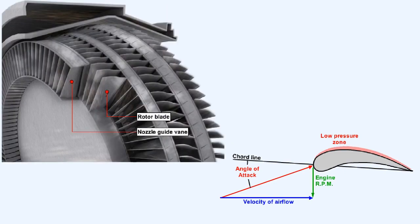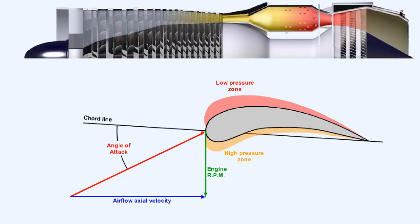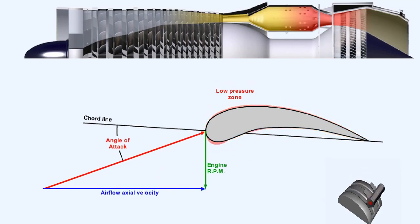A contaminated or damaged turbine will not be capable of generating the power required to drive the compressor at the correct speed. This will make the compressor incapable of generating a sufficiently high compression ratio, which in turn will mean that the axial velocity through the compressor will increase. Excessively lean fuel-air mixture, which could be caused by abrupt throttle retardation, will cause the axial velocity of the airflow through the compressor to be increased by the decreasing combustion chamber back pressure.